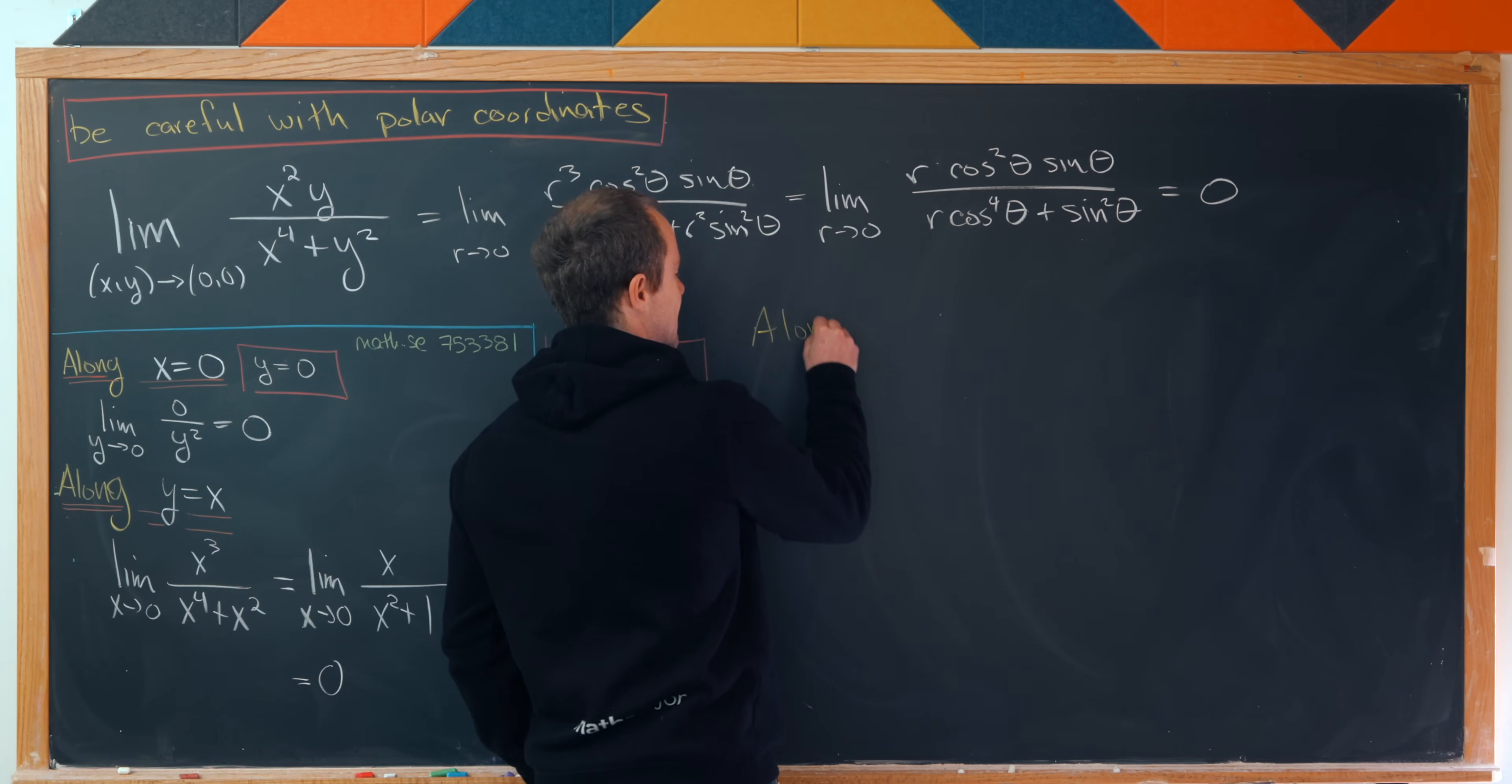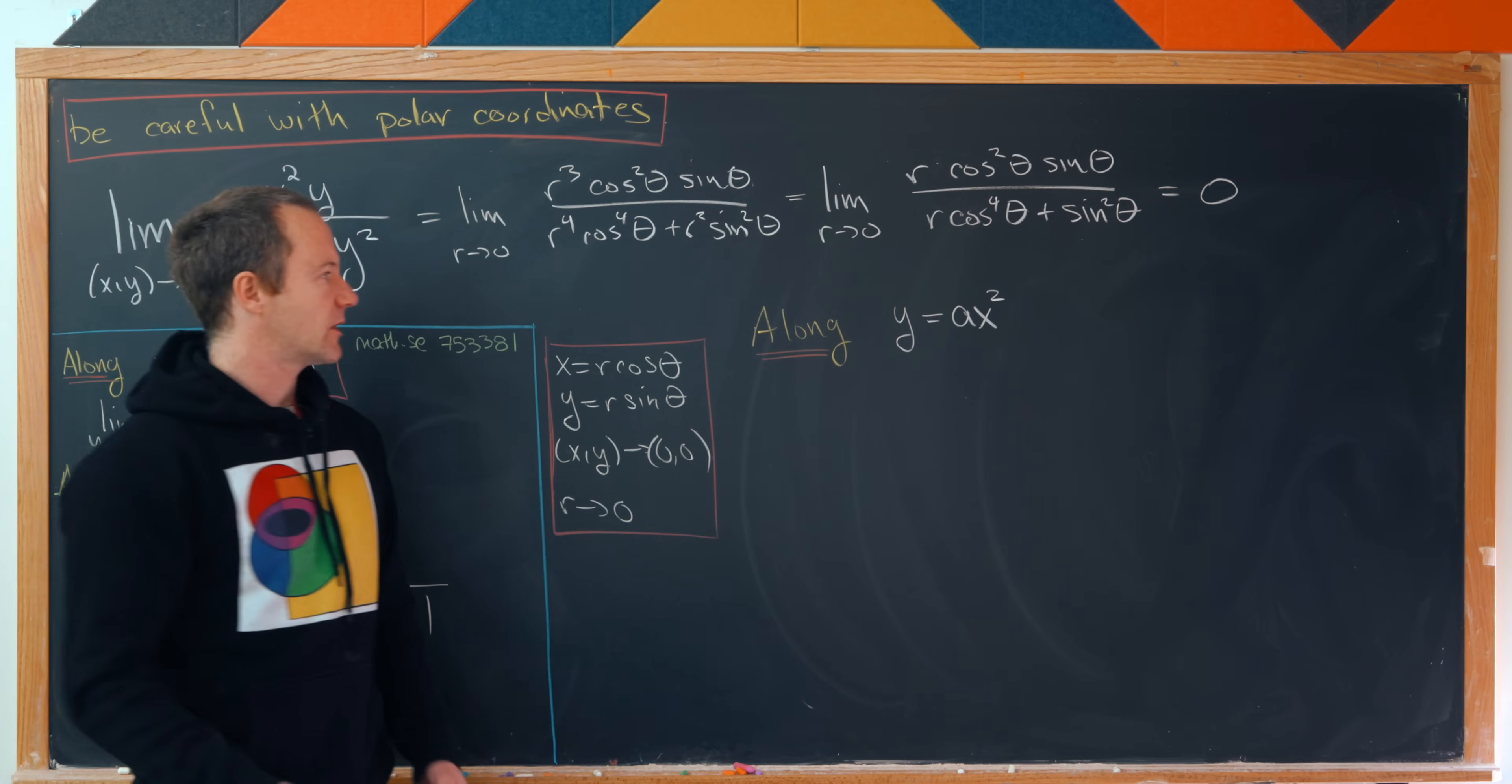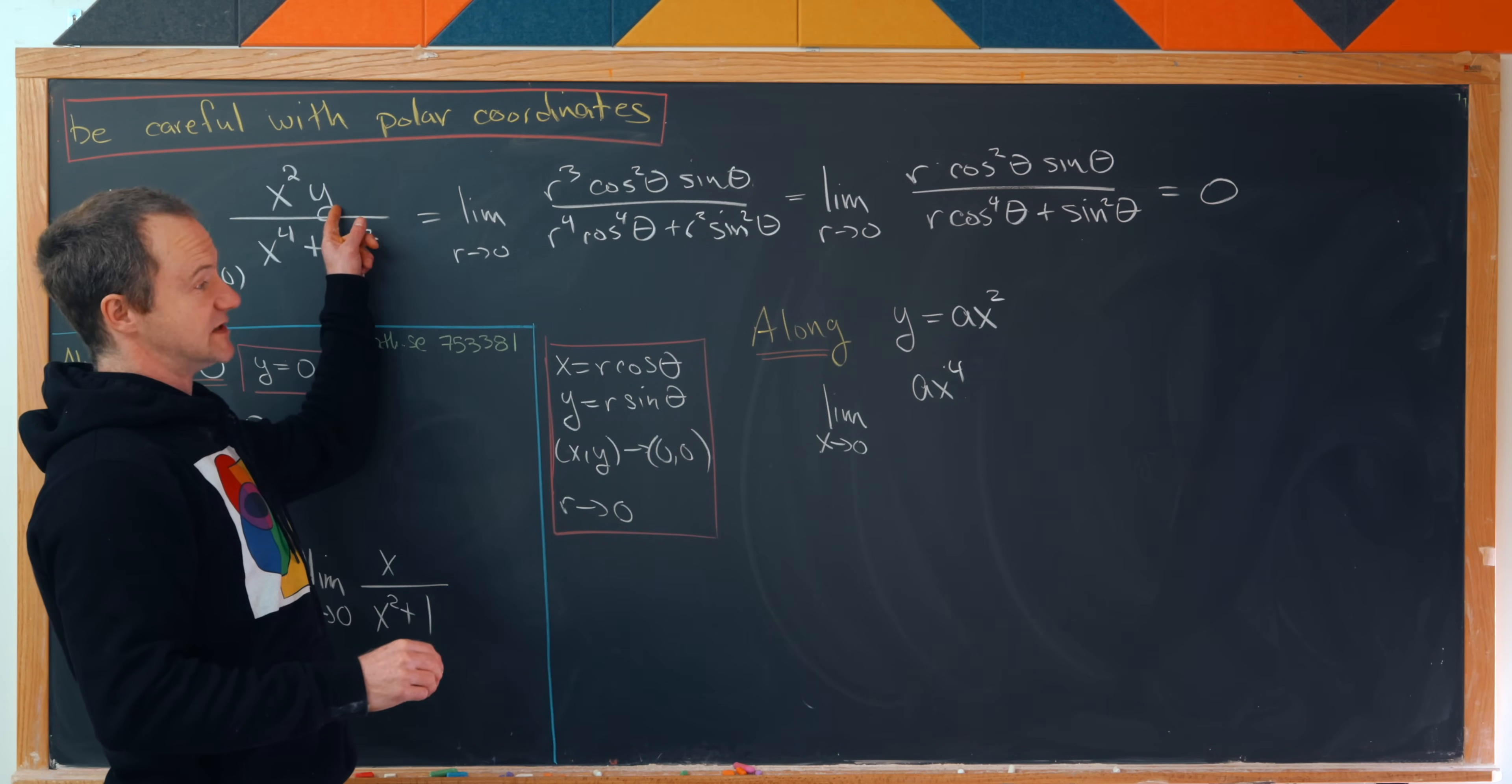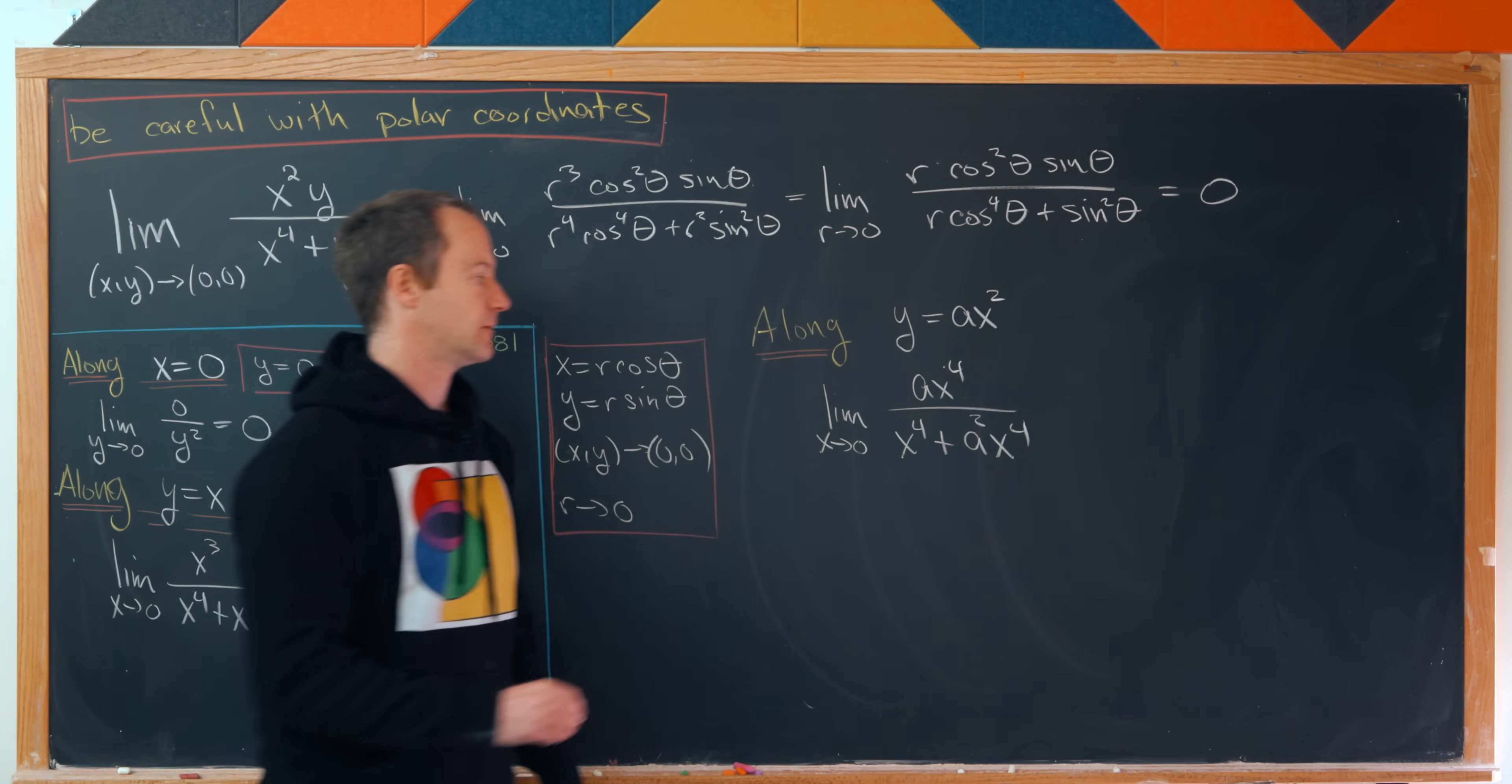So in this case for this last case, let's go along the curve y equals a times x squared, where a is really just any number. Okay, so in that case our limit will turn into the limit as x goes to zero of a times x to the fourth. So that's what we get in the numerator because y is equal to ax squared. And then in the denominator we'll get x to the fourth plus a squared x to the fourth.